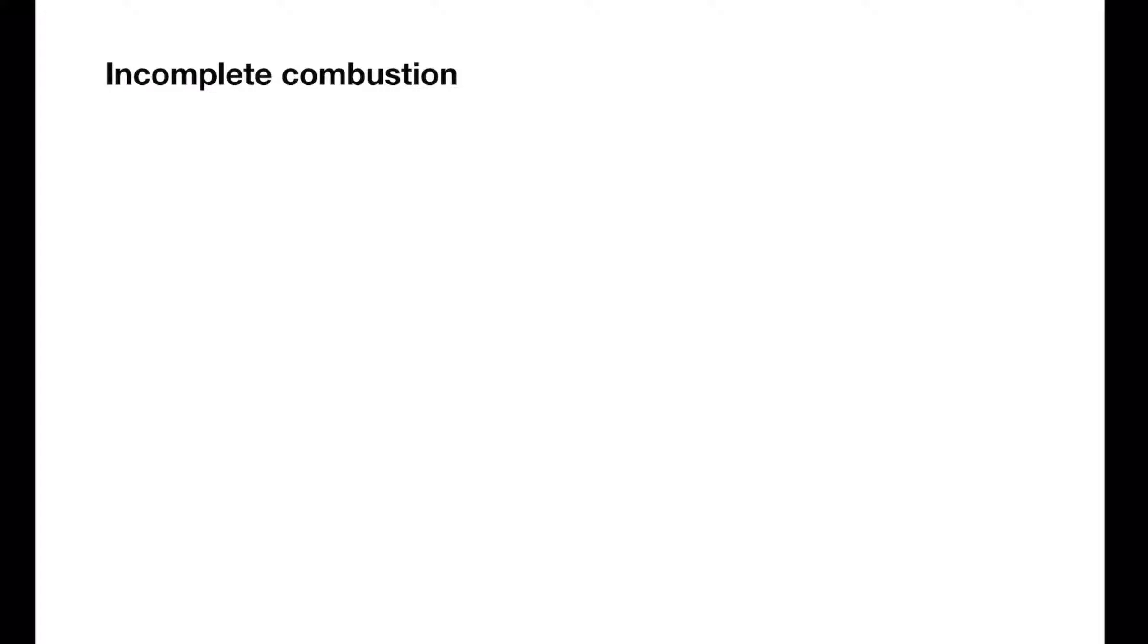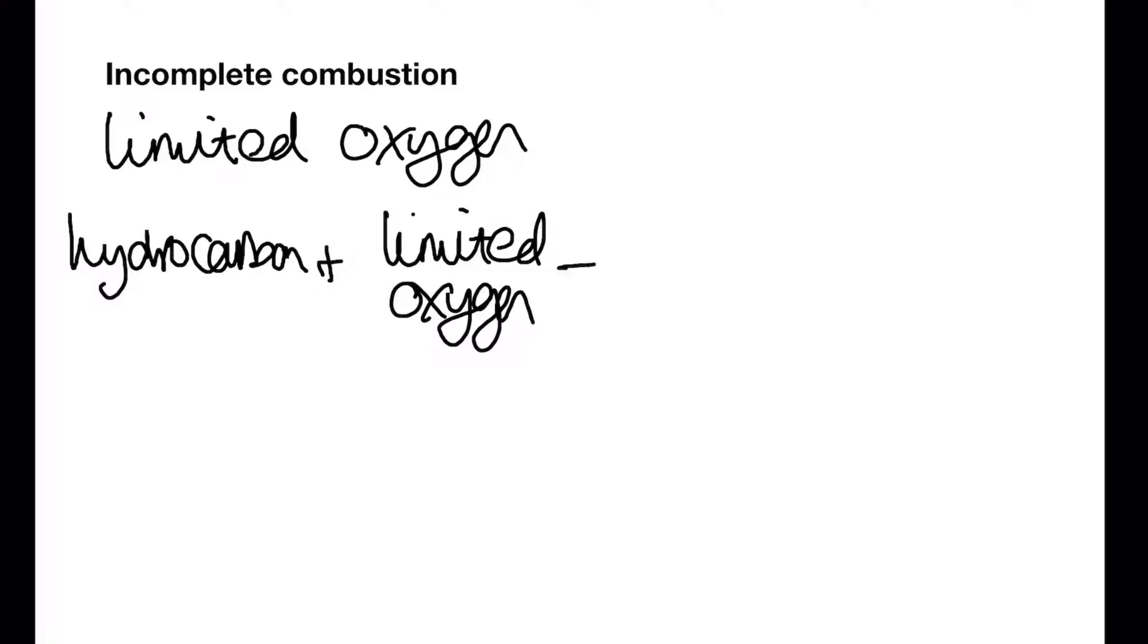But what happens if we don't have a plentiful supply of oxygen? We then get something called incomplete combustion. This occurs when we have limited oxygen available. We're still burning our hydrocarbon, but this time we don't have enough oxygen to produce carbon dioxide. Instead we produce carbon, which is soot. Carbon monoxide, which is dangerous. And water.